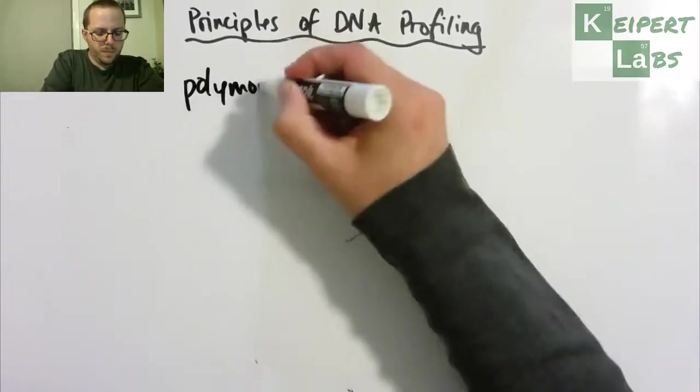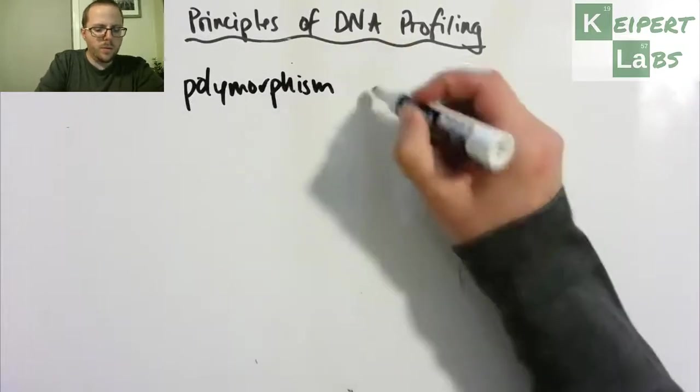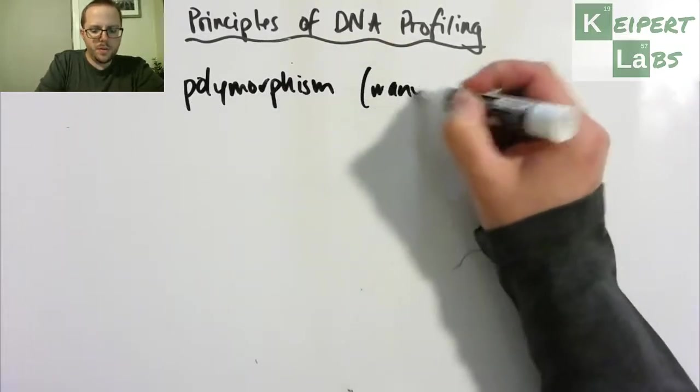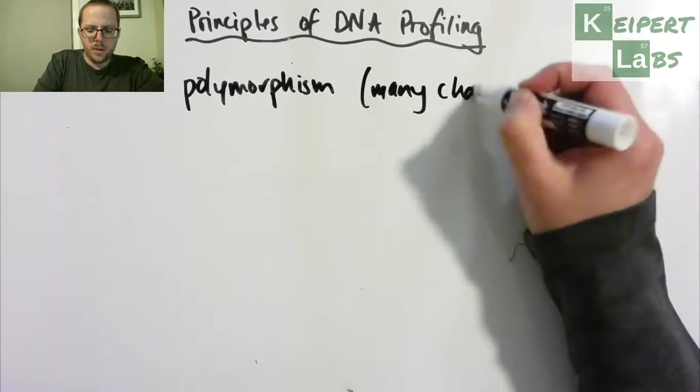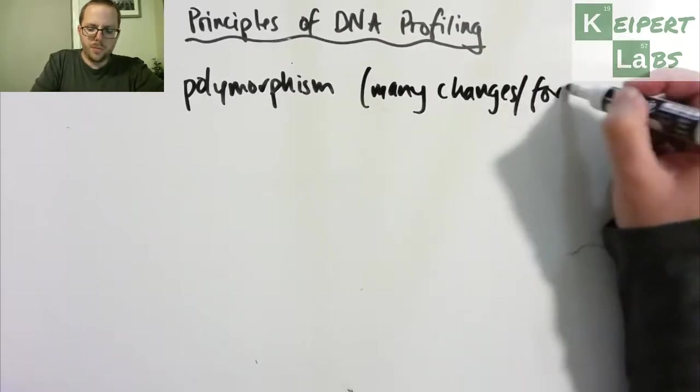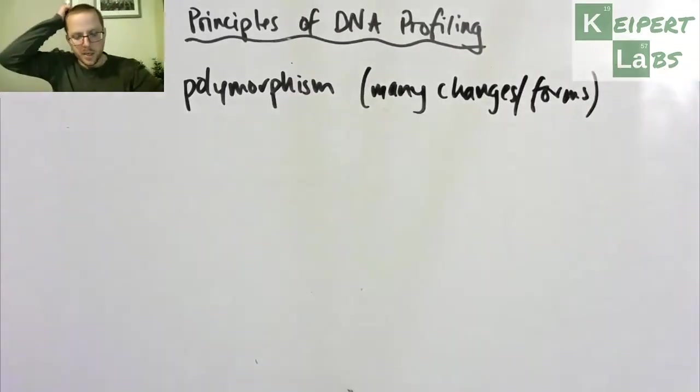And that comes down to a word that we call polymorphism. Or many changes. Poly or many, many changes or forms. So poly, many, morph, or a particular form or kind of a type.